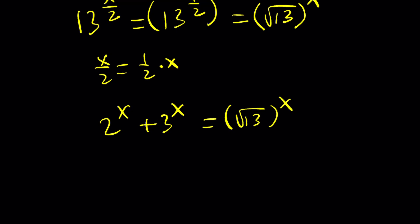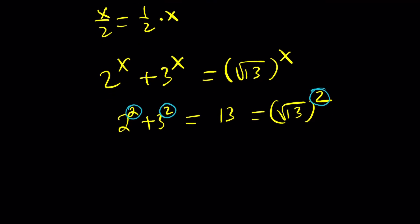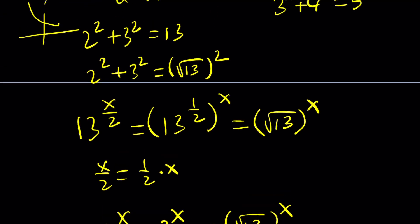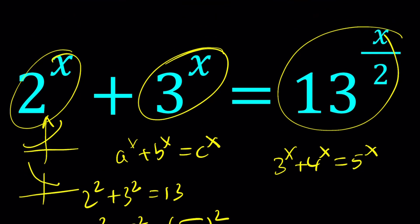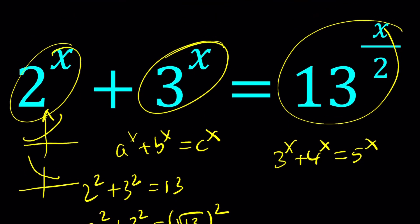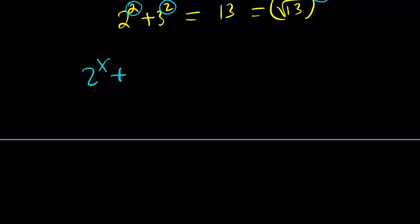Wait a minute, didn't you just say 2 squared plus 3 squared equals 13, and 13 can be written as square root of 13 squared? So 2 is a solution to this equation. But how do we show or prove there are no other solutions? When you look at these equations, both functions are increasing, so that didn't give us information. Let's write our equation like this.